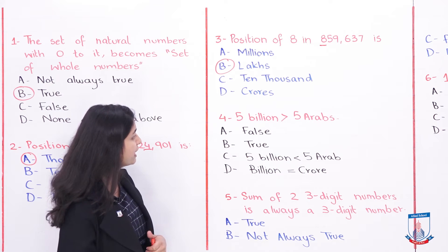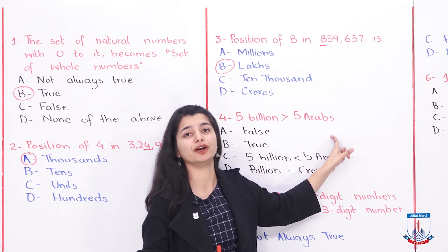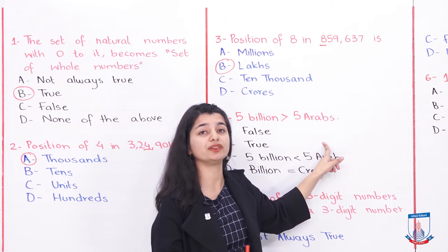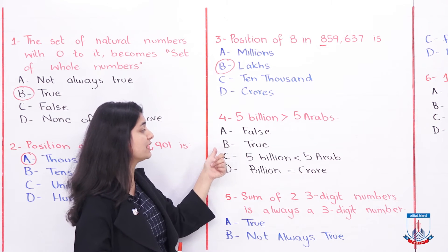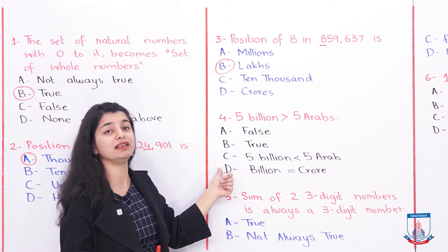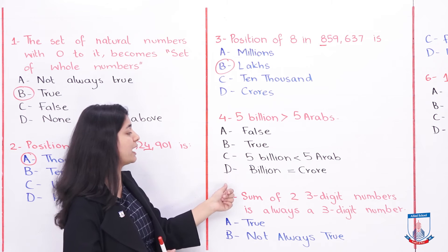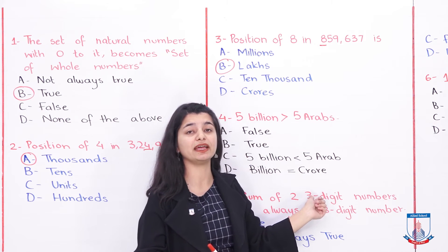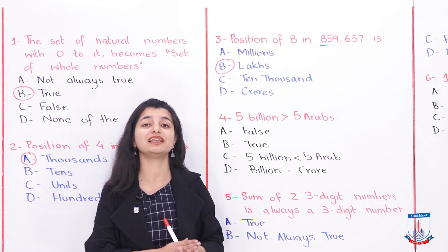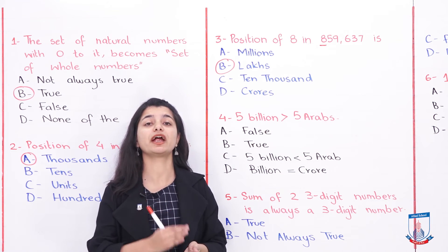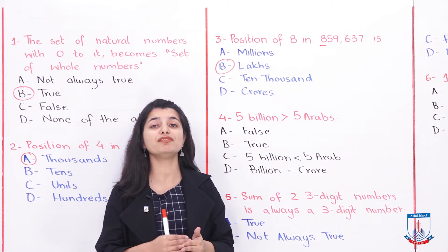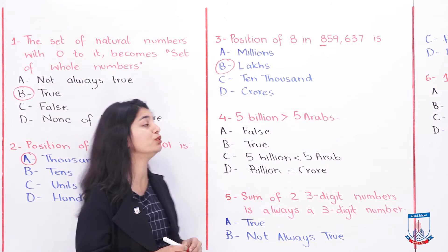The fourth MCQ: 5 Billions is greater than 5 Arabs. They say that 5 Billions are bigger than 5 Arabs. Is this statement false? Is it true? Is it 5 Billions are smaller than 5 Arabs? And then, Billions are equal to crores. You have to understand and utilize what you have on page 27 and see what difference is in billions and arabs. If you can see, they are actually the same. There is no difference. Their values are exactly the same.